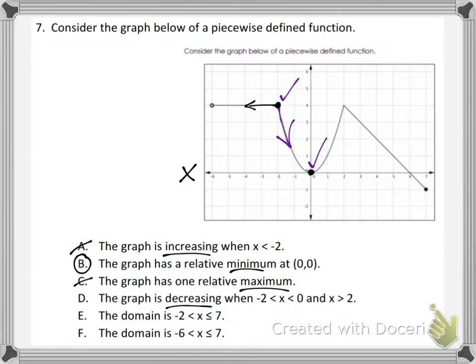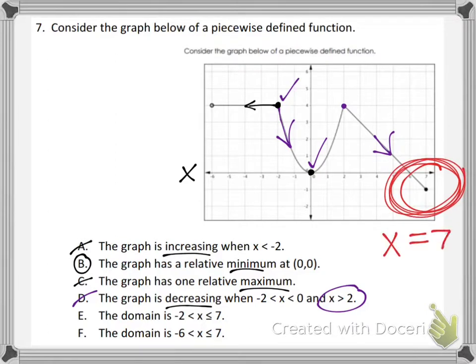However, the second part of this answer choice says, and x is greater than 2, so that means that also must be happening. Well, look where x is greater than 2. It's right here, and the graph is decreasing as x is greater than 2.